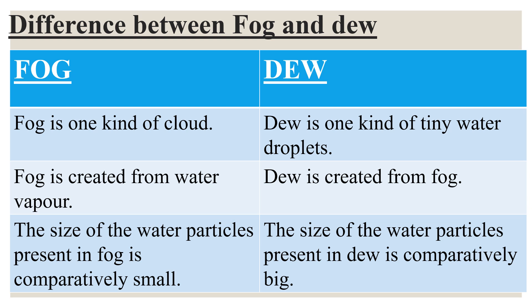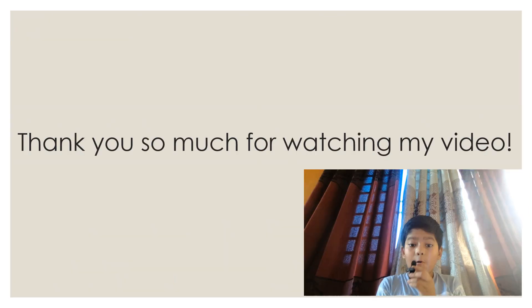Difference between fog and dew: fog is one kind of cloud, while dew is one kind of tiny water droplets. Fog is created from water vapor, whereas dew is created from fog. The size of the water particles present in fog is comparatively small, while the size of the water particles present in dew is comparatively big. We have learned a lot of interesting things today.